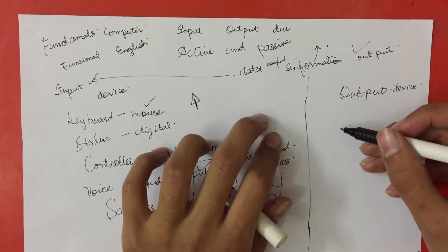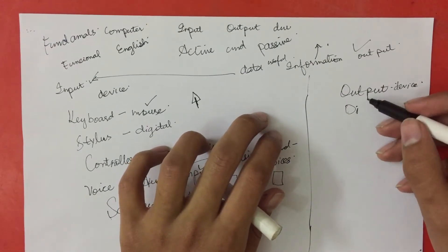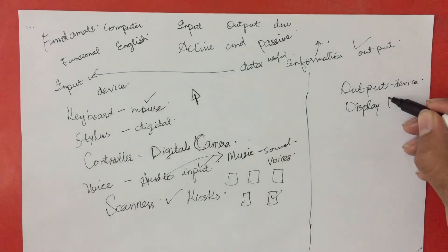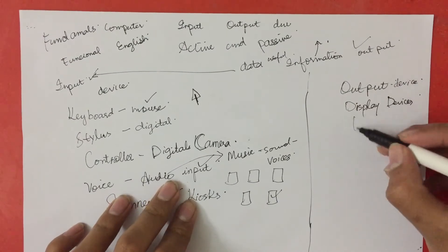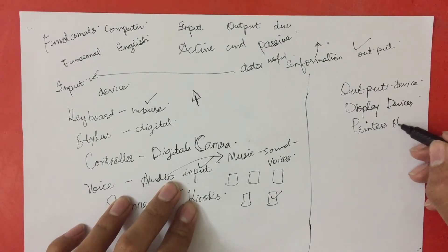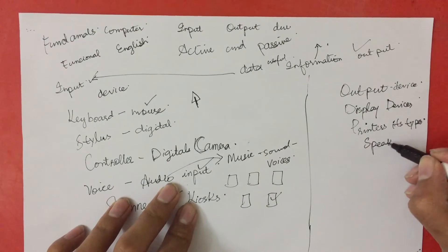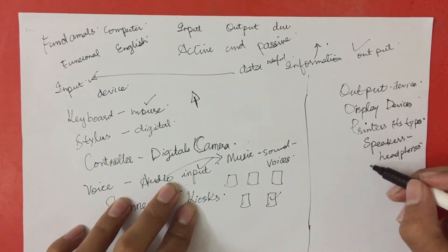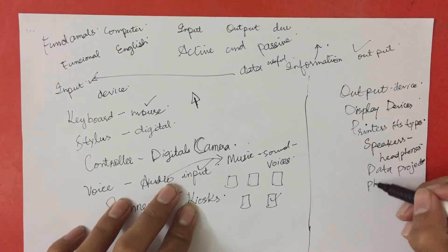We have different kinds of outputs. Outputs have four basic types: text outputs, graphics, sounds, and display devices. For example, we have display devices, we have printers and their types, we have speakers, headphones, and data projectors.